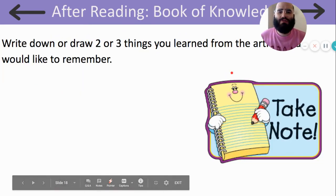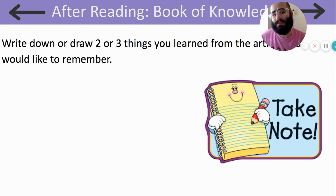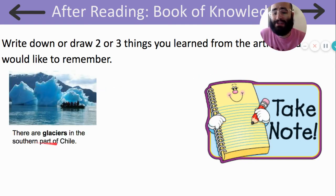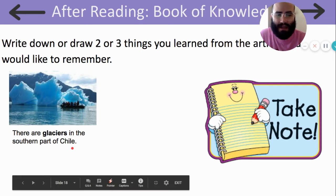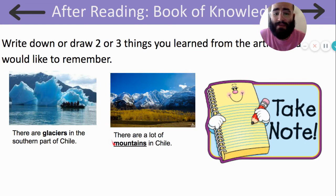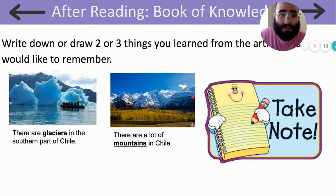Now I want you to write two or three things that you learned from the article that you would like to remember. Pause and take a moment to do that. Now I'm going to show you the things that I wrote down. I said there are glaciers in the southern part of Chile — I love these glaciers, they're very beautiful, just big chunks of frozen ice. And there are a lot of mountains in Chile. The article talked about many different mountain ranges in Chile.